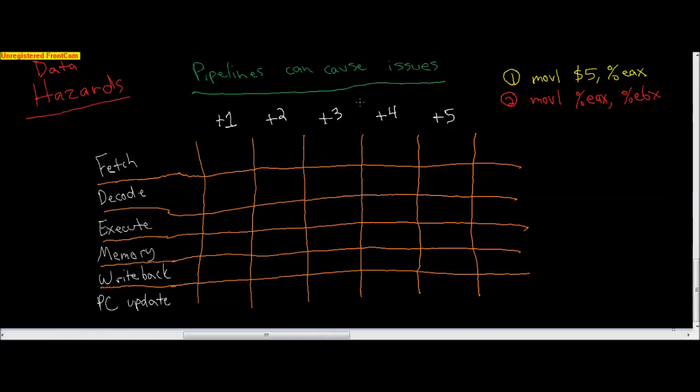Let's take a look at data hazards. Because we broke this down into multiple stages, the pipeline can cause issues for when we need to read and write different values. Let's take a look at these instructions. Initially, this moveL goes into the fetch stage. At time two, it'll move to the decode, and instruction two will move into the fetch. At time three, this thing would move to the execute stage, and two would move to the decode.